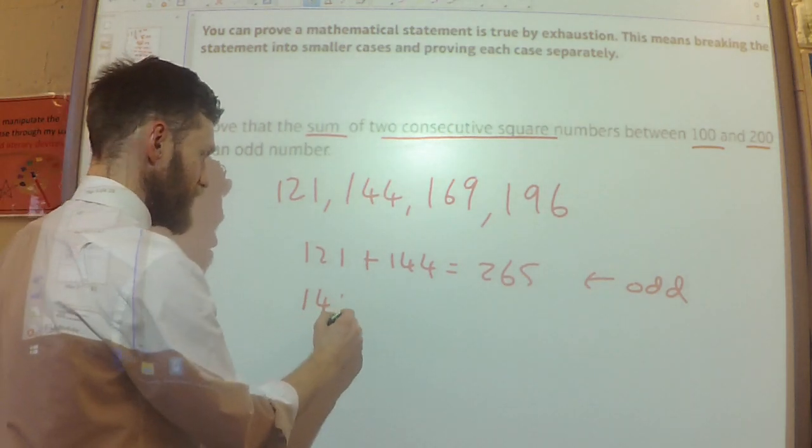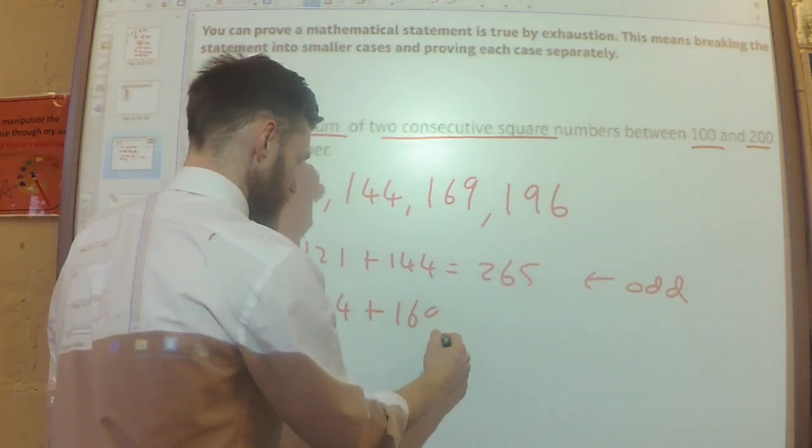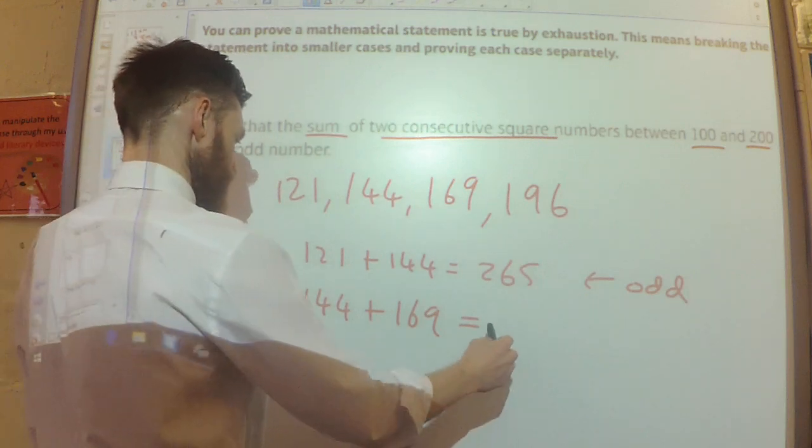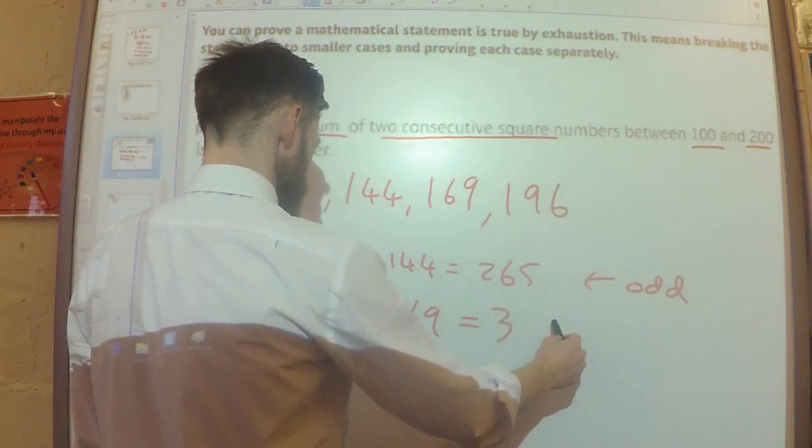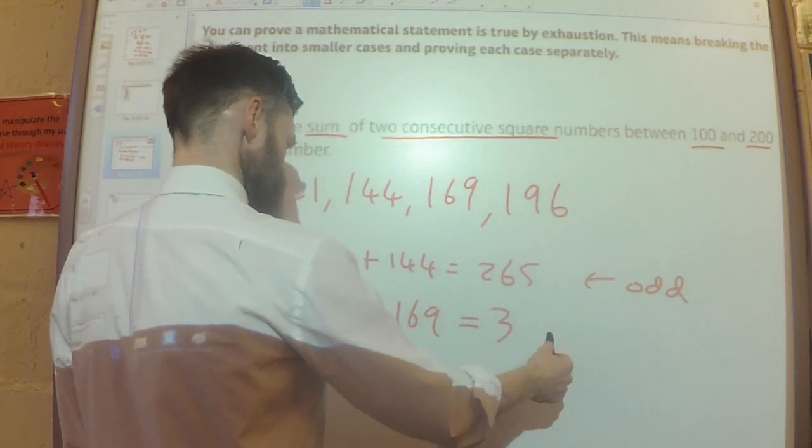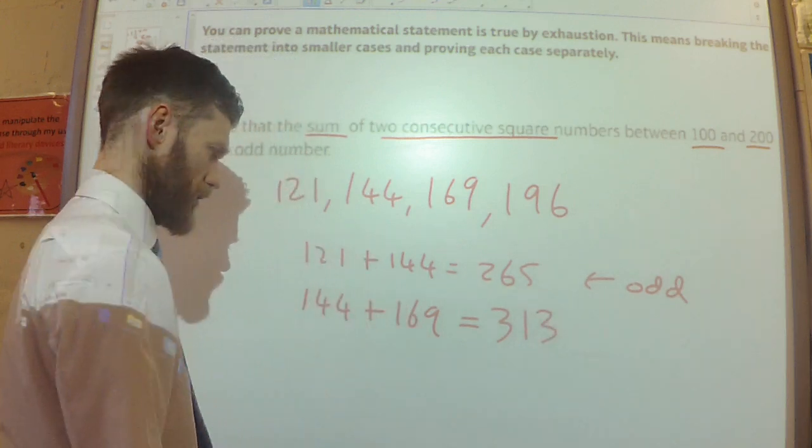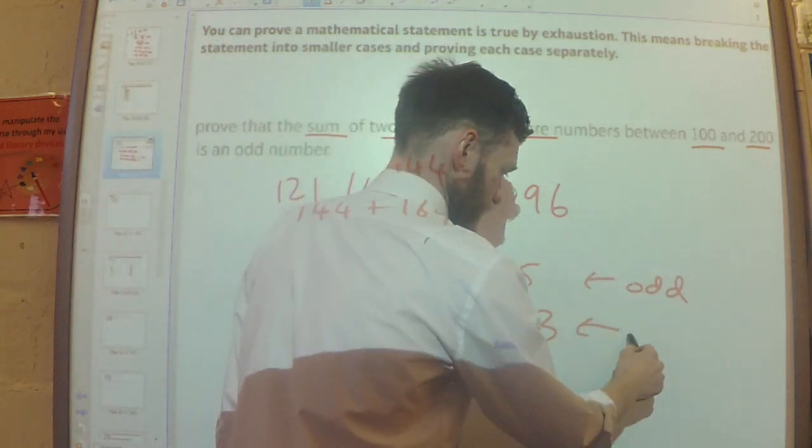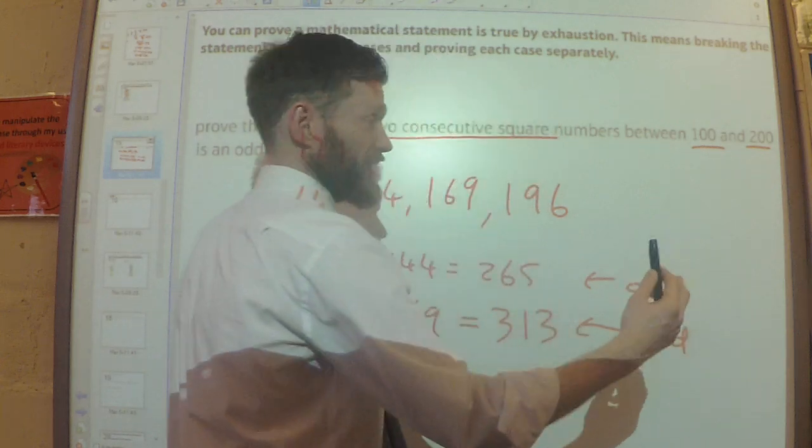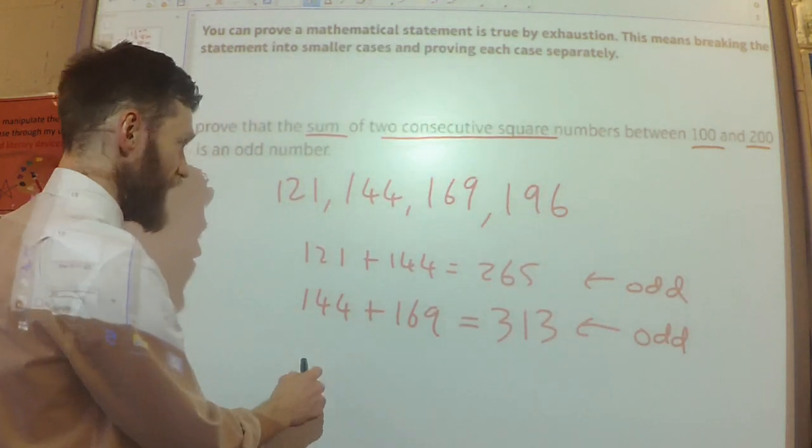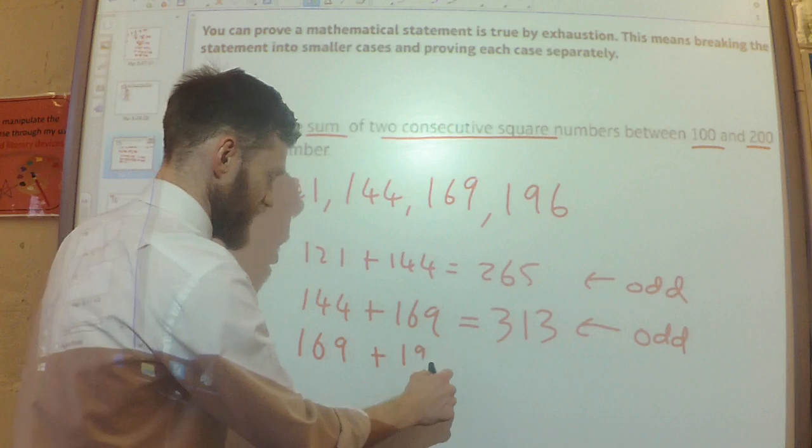Right, 144 plus 169, that is 313. Yeah, 313, I think. Again, that's odd. That seems to work. Right, next, 169 plus 196.